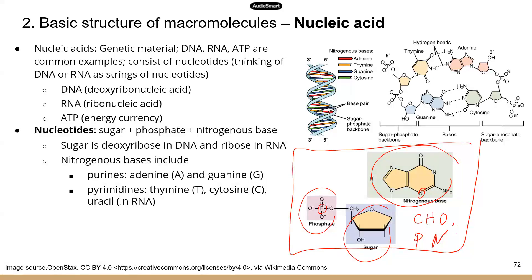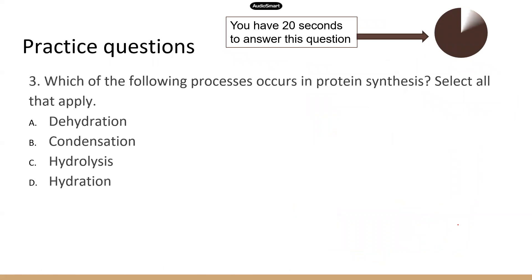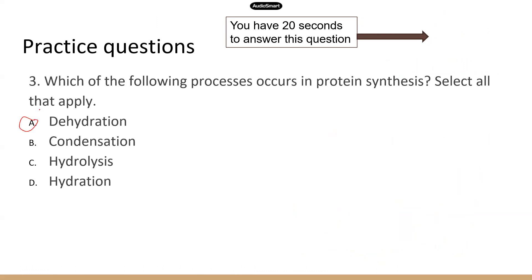Now let's move on to practice questions. This question is about protein synthesis — either dehydration synthesis or condensation. If we change the question to 'what's the end product of protein digestion?' the answer would be the building block, which is amino acid.